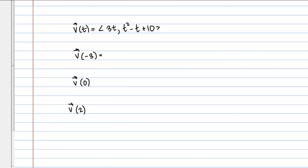So I'm simply plugging in here. So for V of negative 3, I get 3 times negative 3 for my X component. And for my Y, negative 3 squared minus negative 3 plus 10. And that should give me negative 9 for my X component. And for my Y component, 9 plus 3 plus 10. So finally my vector is negative 9 comma 22.